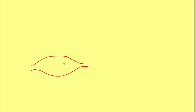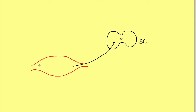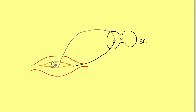Every skeletal muscle has two components. One is the extrafusal fibers, which are contractile and are supplied by the alpha motor neuron coming from the spinal cord. The other component is the intrafusal muscle fibers, which are sensory. So a muscle, which we always think of as motor, also has a sensory component. These intrafusal fibers are supplied by sensory fibers — 1A and 2 fibers — which enter the spinal cord and synapse with the alpha motor neuron.